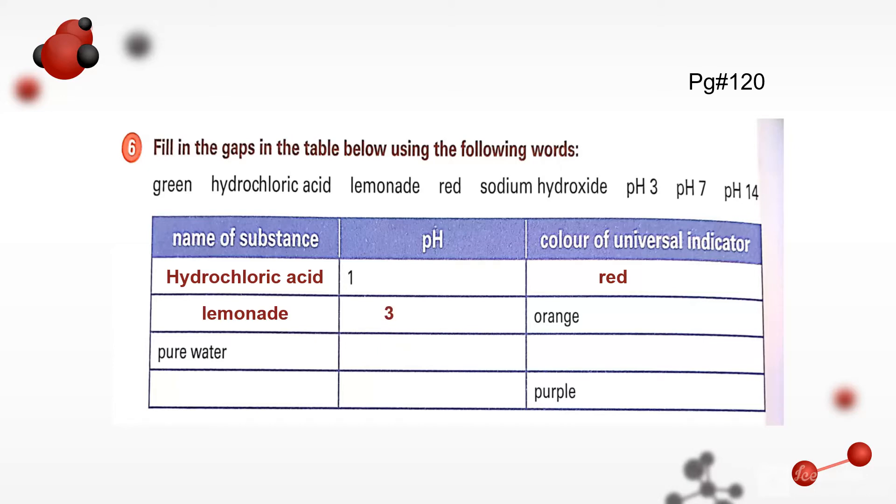Pure water has pH 7, we all know, and its universal indicator is green. And the last one is purple, so it indicates alkali substance. That will be sodium hydroxide, and its pH will be probably 14.